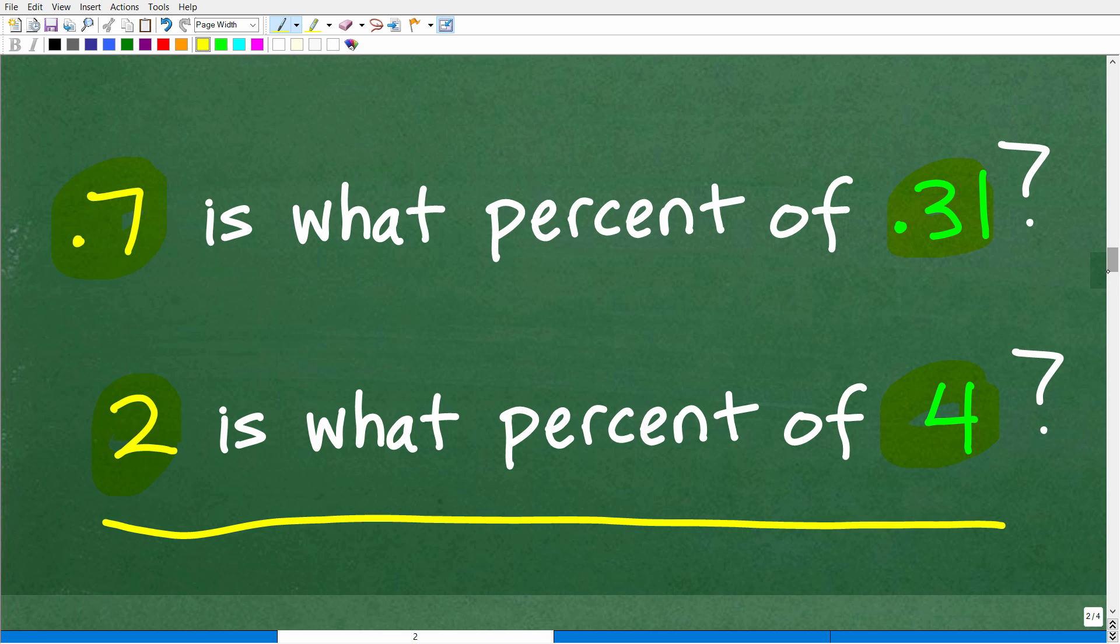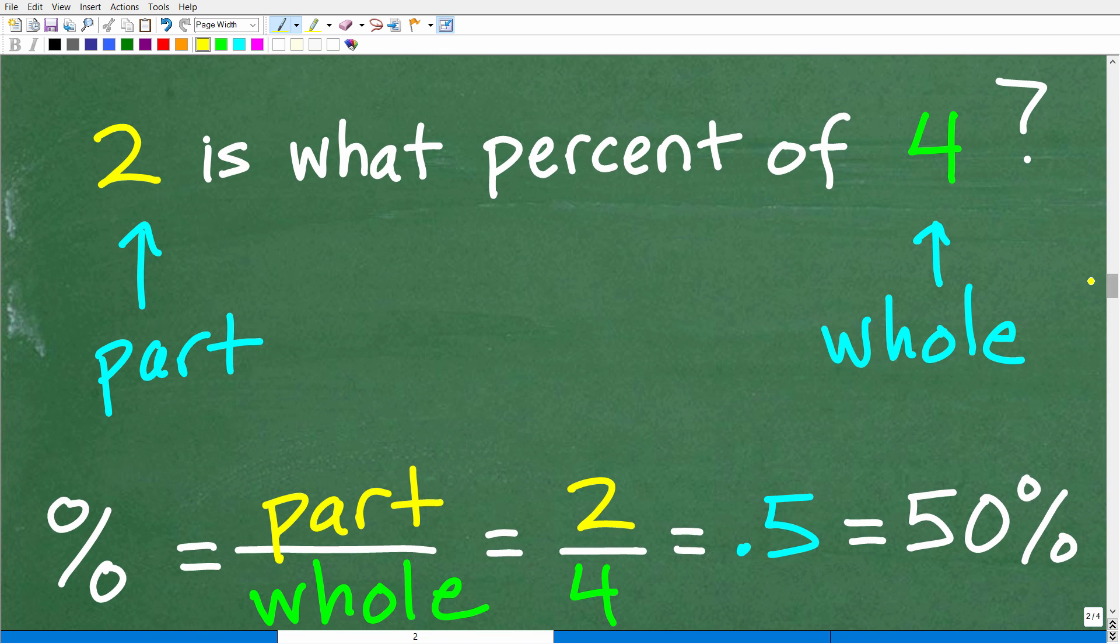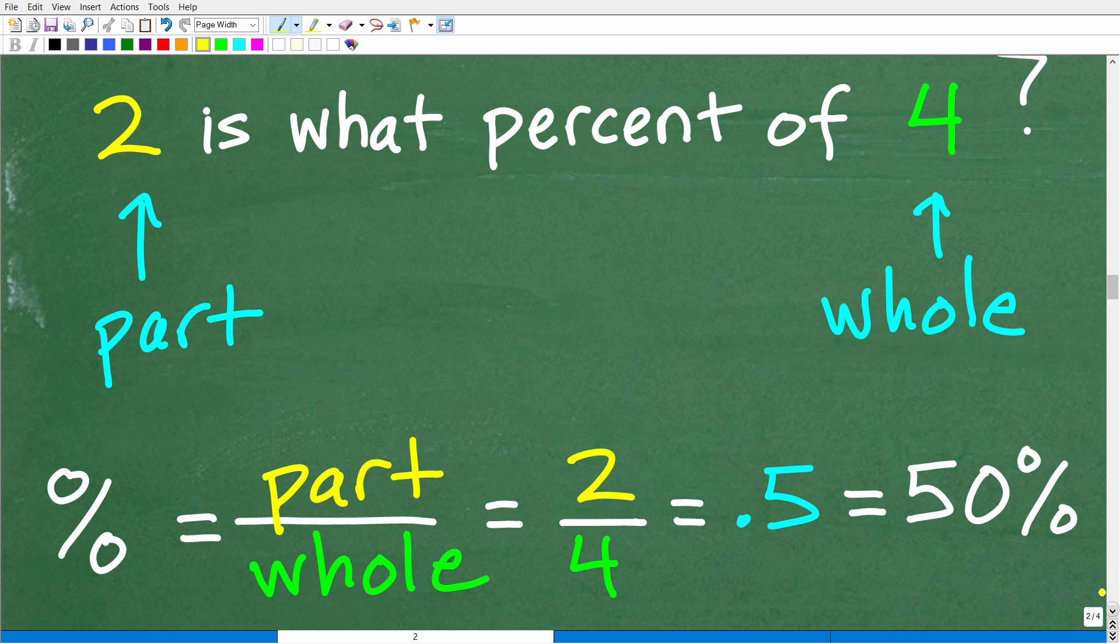Hopefully you said, Mr. YouTube Math Man, it's 50%. And I would say, yes, indeed, you are a mathematical genius. That is correct. It is 50%. But let's kind of review what's going on here. A great model for percent in terms of percent problems is to think of the part out of the whole or part out of the total setup. Let me show you what I'm talking about here.